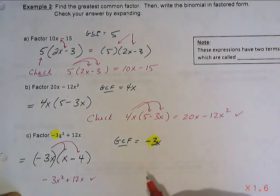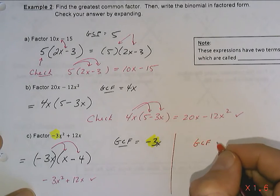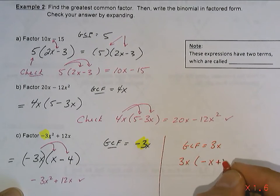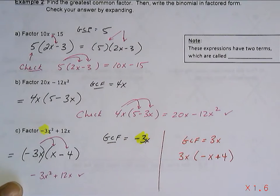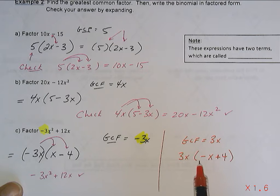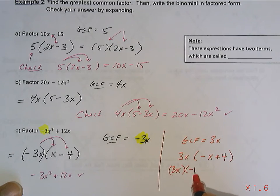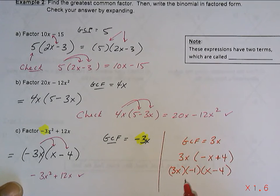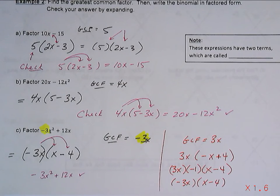If you didn't factor out the negative, it wouldn't be wrong, but it would look like this: GCF of 3x gives 3x times open bracket negative x plus 4. It's not wrong, it just looks odd — we prefer the first term inside the bracket to be positive. If you got that form and wanted to factor out a negative 1, dividing negative x by negative 1 gives positive x, and positive 4 by negative 1 gives negative 4, bringing you back to the same answer of negative 3x times open bracket x minus 4.